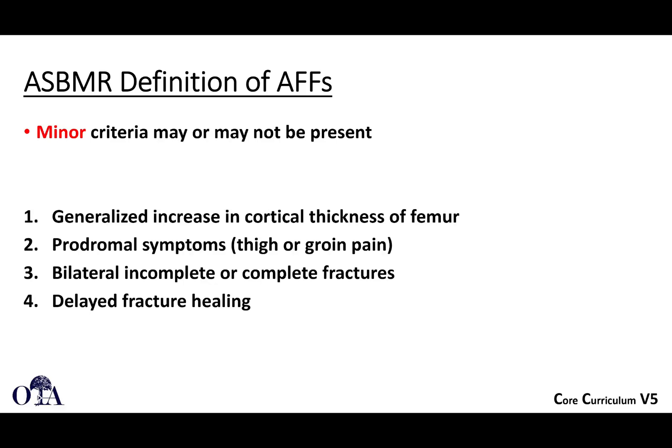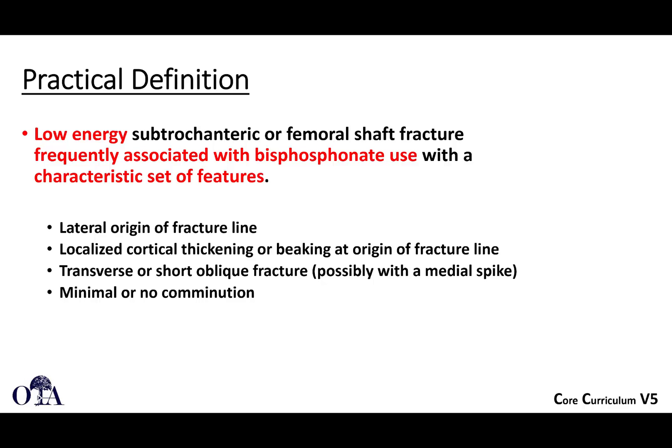The practical definition is that it's a low-energy subtrochanteric and sometimes femoral shaft fracture, frequently associated with prolonged bisphosphonate use — typically years — with a characteristic set of features: a lateral-based fracture line with thickening and beaking at the origin, a transverse or short oblique fracture, maybe with a medial spike, and not very comminuted. It's a pathological fracture — not from major trauma, but due to something wrong with the bone — sharing some characteristics of a tumor-related pathological fracture except for the beaking and lateral origin of the fracture line.